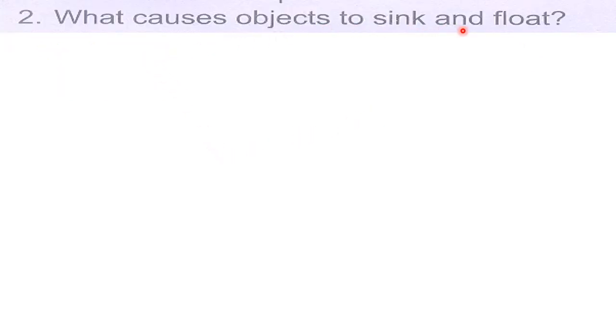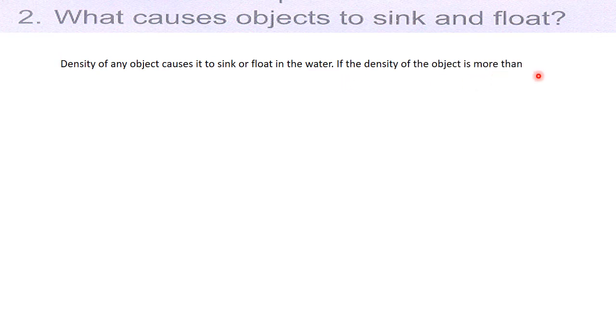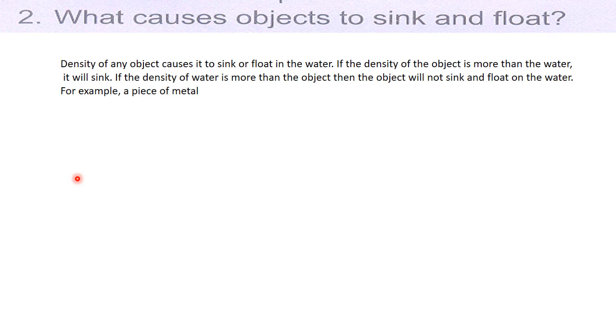What causes objects to sink and float? Density of any object causes it to sink or float in the water. If the density of the object is more than the water, it will sink. If the density of water is more than the object, then the object will float on the water. For example, a piece of metal will sink in the water while a piece of wood will float on it. You know that the density of water is more than the density of wood, while in the case of metals, the density of metals is more than the density of water.